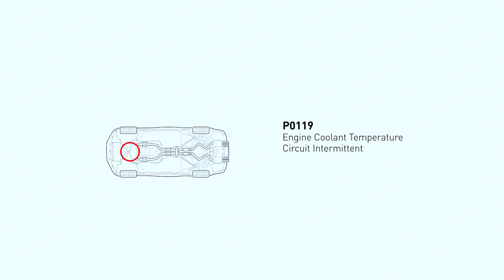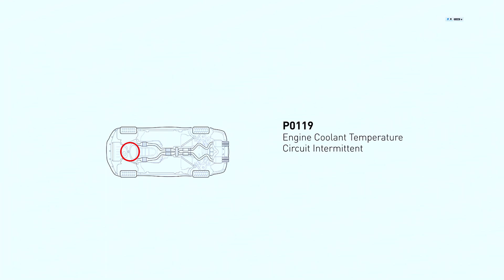The Engine Coolant Temperature ECT Sensor is a vital part of your engine's management system. It tells the computer how hot things are running, which affects things like fuel mixture and idle speed. When the computer gets a weird signal, it throws code P0119.